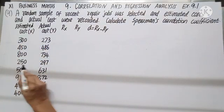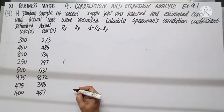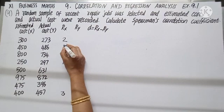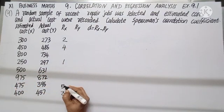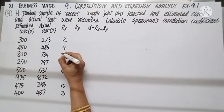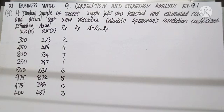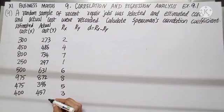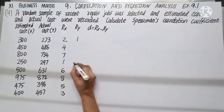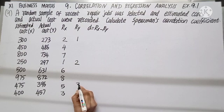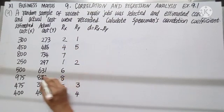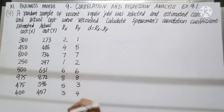Out of all X values, 250 is the least — rank it as 1. As we proceed: 300 is rank 2, next comes 400 as rank 3, 415 as rank 4, 475 as rank 5, 500 as rank 6, 800 as rank 7, and finally 975 as rank 8. In the same way, allot ranks for Y in ascending order. The smallest number is 273, that is rank 1; 297 is rank 2; 396 is rank 3; 457 is rank 4; 486 is rank 5; 631 is rank 6; 734 is rank 7; and 872 is rank 8.